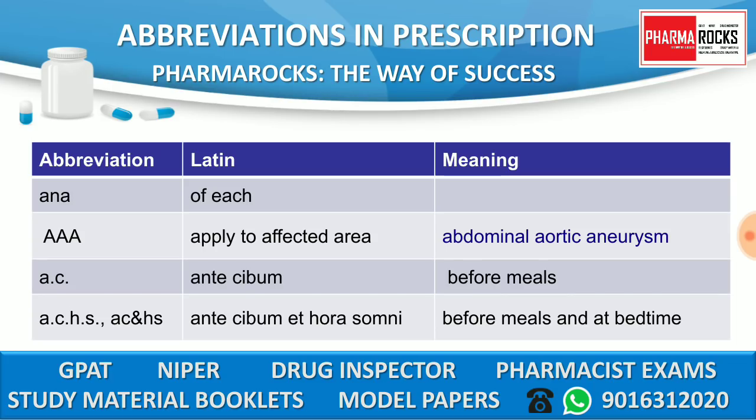The first abbreviation is ANA. ANA means 'of each.' The second one is AAA — triple A — which means 'apply to affected area': the first A means apply, the second A means affected, and the third A means area.